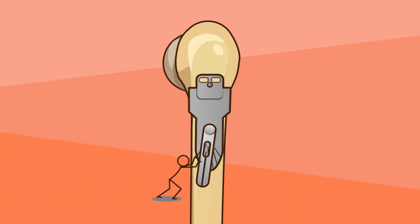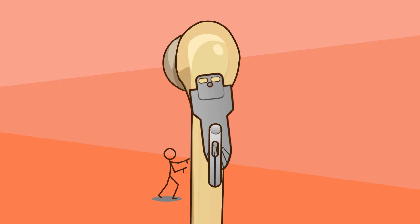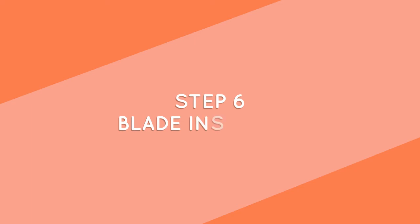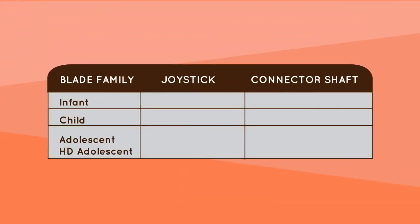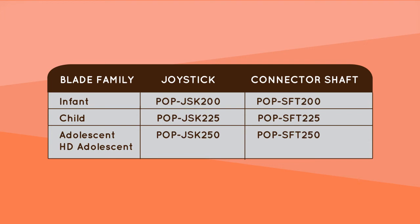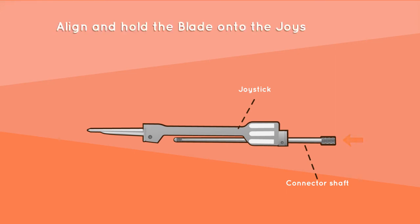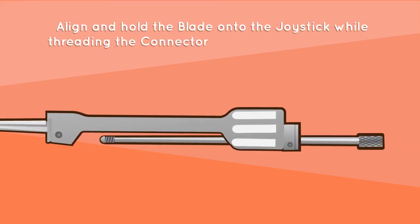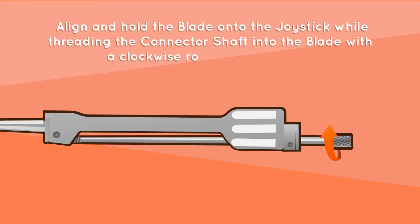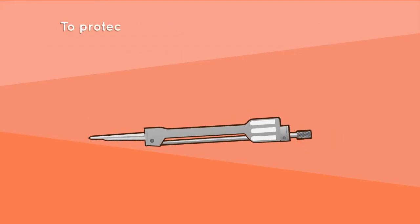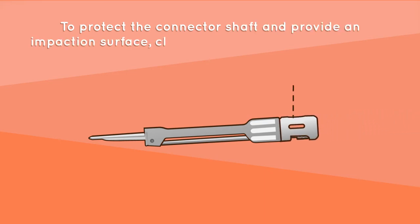Rotate the cortex breaker around the guide wire until the dial of the flexion-extension guide is aligned with the femoral shaft. Step 6: blade insertion. Select the joystick and connector shaft corresponding to the blade family in the table. Slide the corresponding connector shaft through the joystick. Align and hold the blade onto the joystick while threading the connector shaft into the blade with a clockwise rotation of the knob.